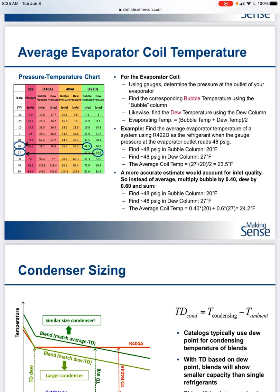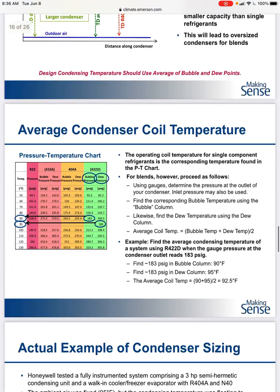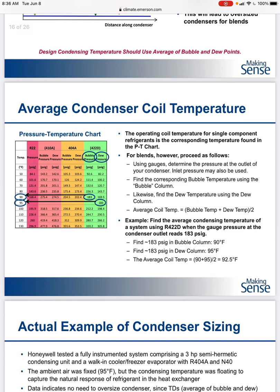This is an Emerson presentation about average coil temperature. To get the average coil temperature of a blended refrigerant, we take the pressure in the bubble point column and the dew point column at the bottom. The average coil temp is 40% of the bubble temp plus 60% of the dew point to get the average coil temperature on the evaporator side — this is because of the flash gas in the evaporator. On the condenser side, we take the bubble point plus the dew point temp divided by two to get average condensing temperature.